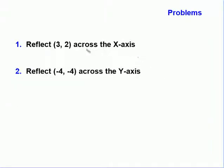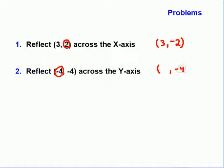Let's do a quick couple of problems using our x and y-axis and reflection without the grid. First, reflect (3, 2) across the x-axis. Remember, we're reflecting across the x-axis, so the y-coordinate should change. We get the same x-coordinate and the y-coordinate changes to its opposite: (3, -2). Next, reflect (-4, -4) across the y-axis. Since we're reflecting across the y-axis, the x-coordinate is the one that changes to its opposite. So we wind up with (4, -4).